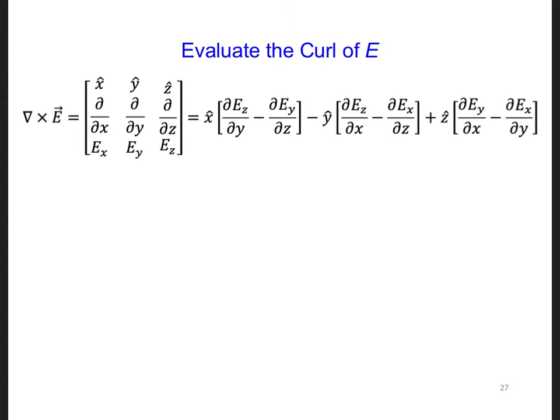I've written out the curl of the electric field on this slide. All the partial derivatives with respect to y are 0. These two terms are 0, since our two-dimensional model only allows for field components to change in the x and z direction.